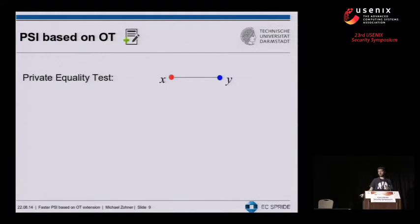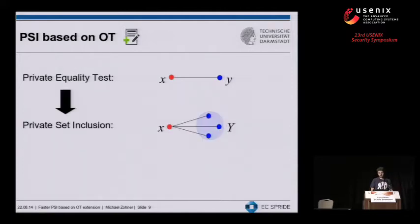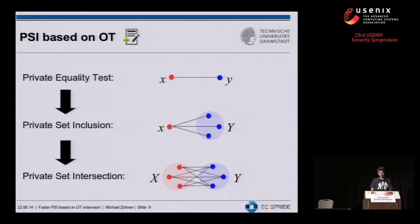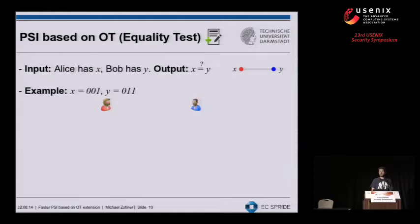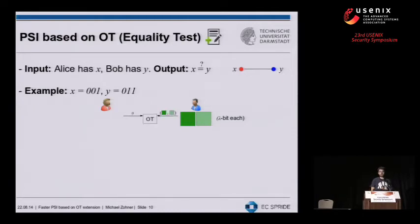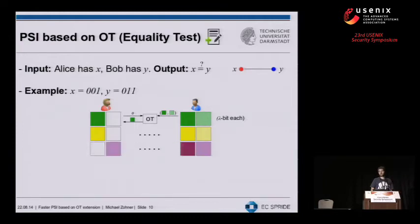Now I'll show you the protocol we developed, in three steps. I'll start by explaining the basic functionality: testing equality between an input X and an input Y. As a basic example, assume X held by Alice is 001 and Y held by Bob is 011. Bob generates two random strings (depicted in green and light green), and both parties perform an oblivious transfer where Alice chooses the string corresponding to the first bit of her value X. Alice receives the string, and the parties repeat this for each bit in their elements.